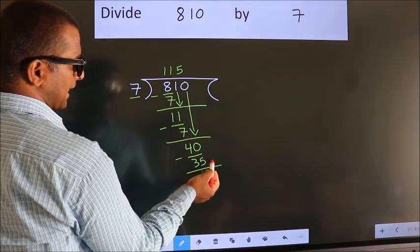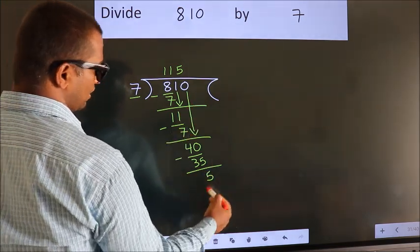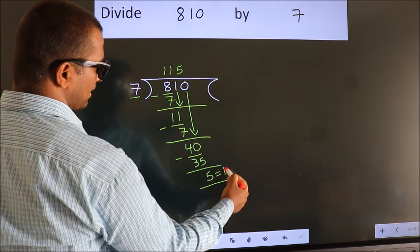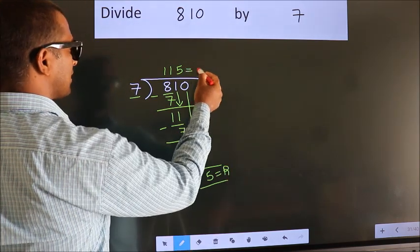No more numbers to bring it down. So we stop here. This is our remainder. This is our quotient.